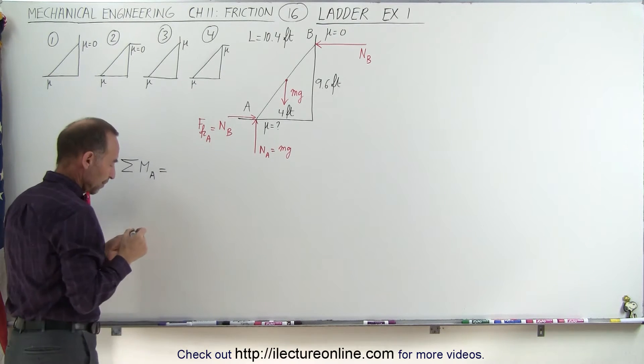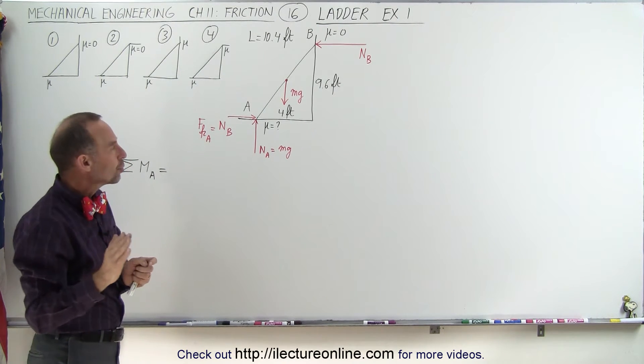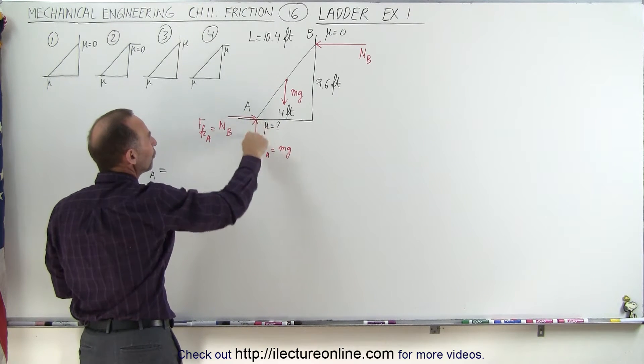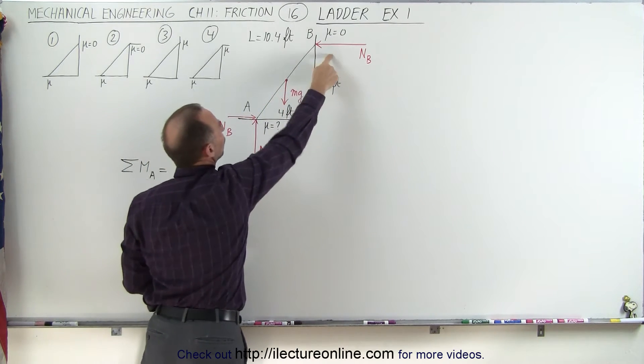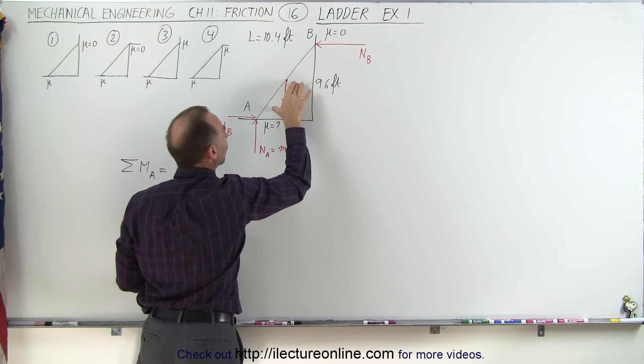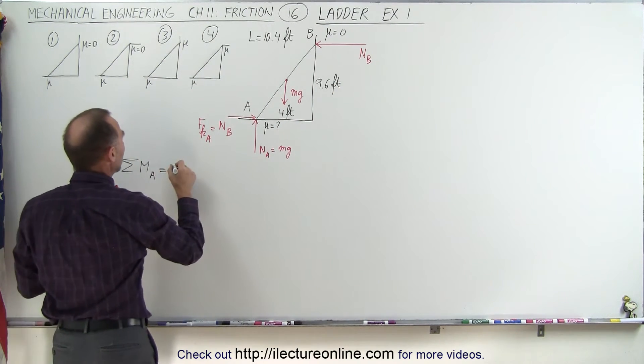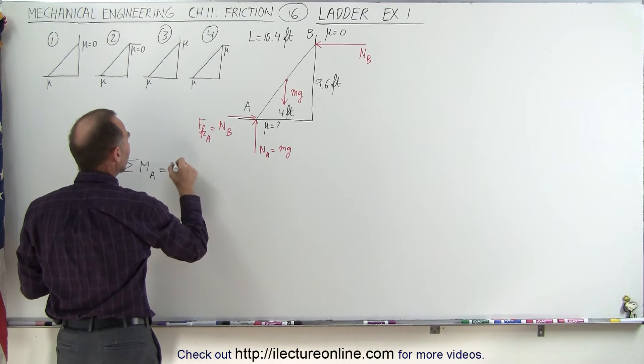Notice when you pick the point, the pivot point right here, you eliminate these two forces and you only have to worry about these two forces right there. This is a known force, so we can calculate the unknown force N sub B. And you know that the moments are going to equal zero if everything stays static.